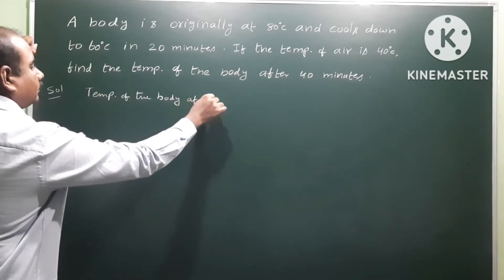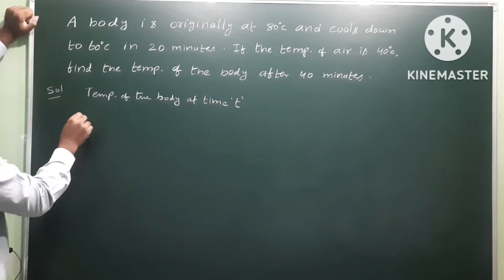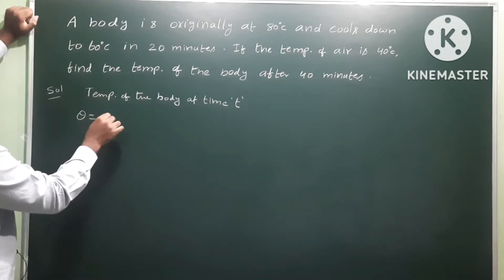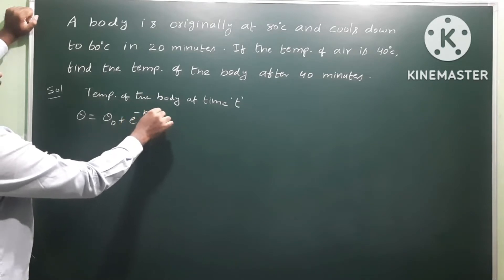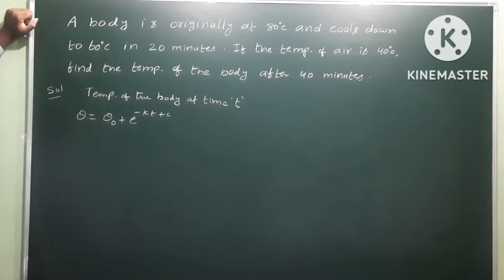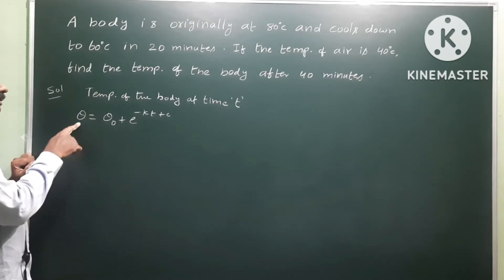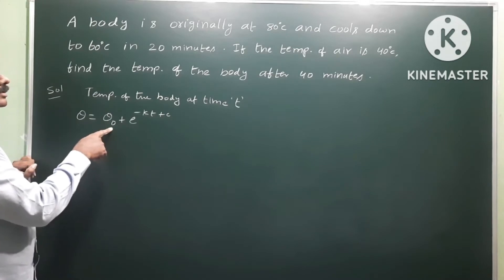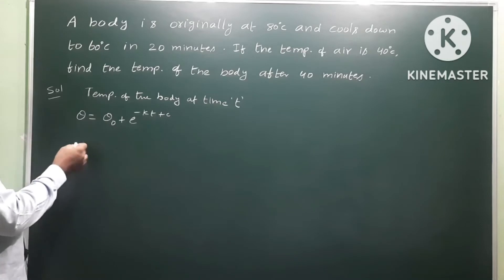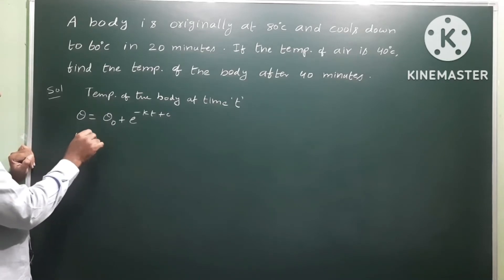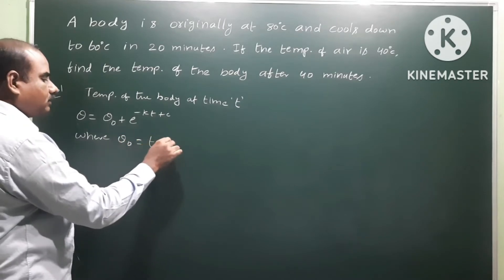Solution: The formula for temperature of the body at a particular time t is theta is equal to theta naught plus e power minus kt plus c. Here theta naught is the temperature of the surrounding medium, which is the air temperature.